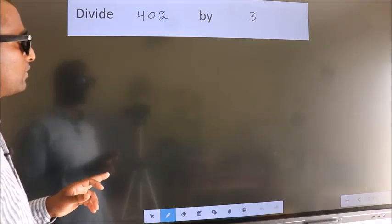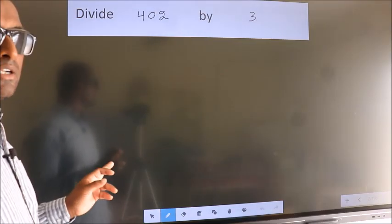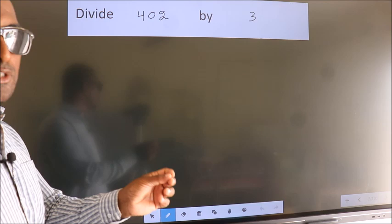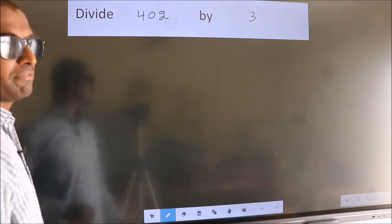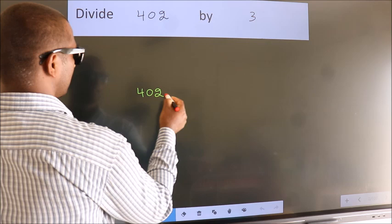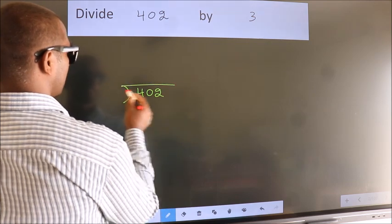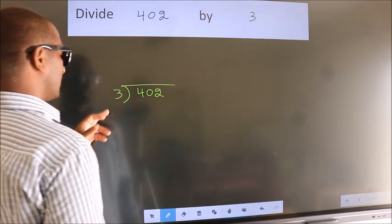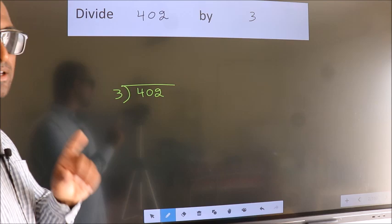Divide 402 by 3. To do this division, we should frame it in this way. 402 here, 3 here. This is your step 1.